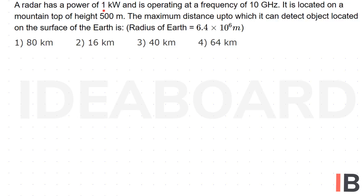A radar has a power of 1 kW and is operating at a frequency of 10 GHz. It is located on a mountain top of height 500 meters. The maximum distance up to which it can detect an object located on the surface of the earth is to be found. Radius of earth is equal to 6.4 × 10^6 meters.